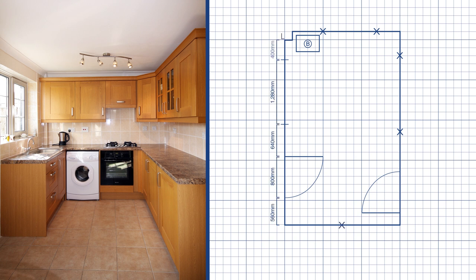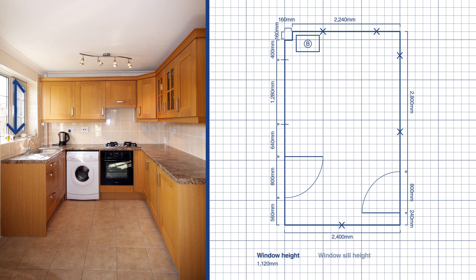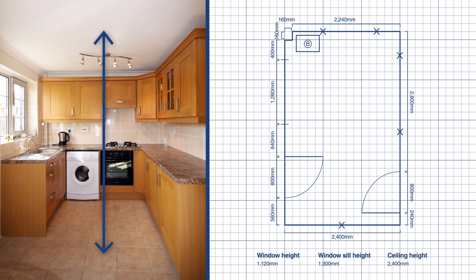Rather than taking an overall measurement, it may help to break it down into smaller sections. When you're measuring the window, don't forget to take the sill height and the height of the window. Measure your ceiling height and make sure it's consistent across the room, taking into account any beams and coving.